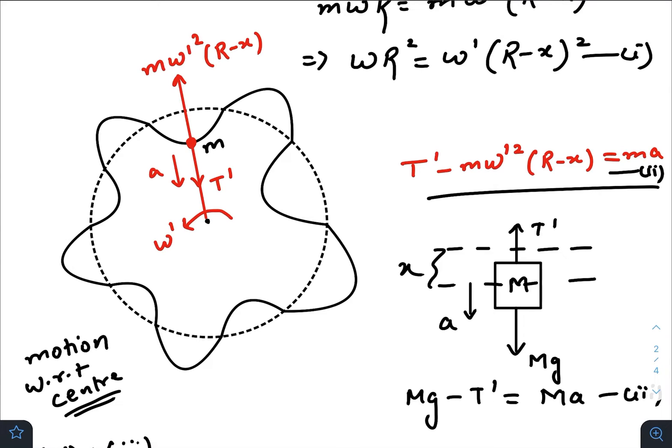While standing on the center, if I draw the free body diagram, we get T prime, a centrifugal force m omega prime squared times R minus x. We are ignoring the Coriolis effect here. So we can write T prime minus m omega prime squared times R minus x equals m times a.